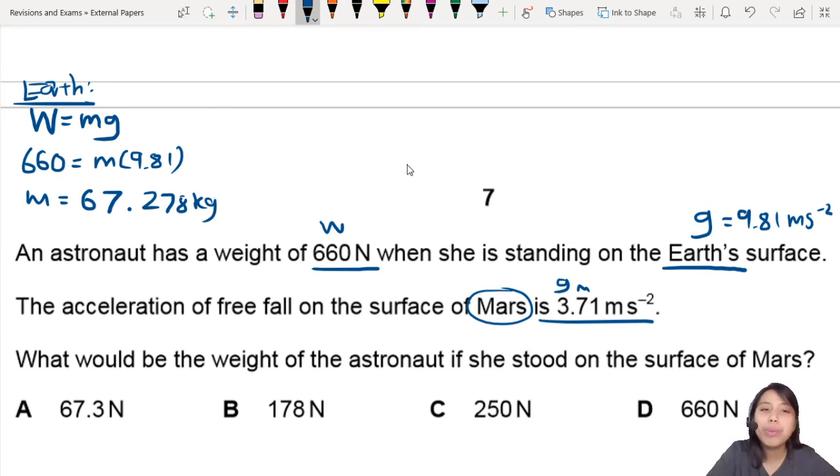And now you take this human to Mars. What changes? The mass is still the same. So you can just say, 67.278. What is G though? G is now 3.71. So that's different.